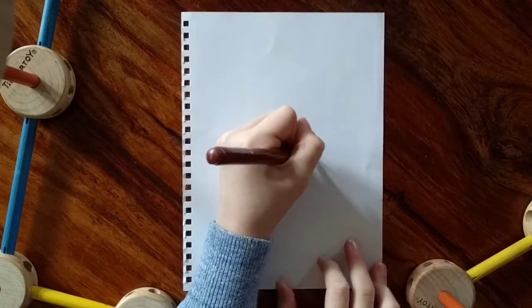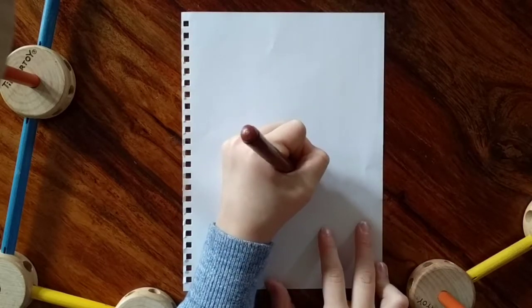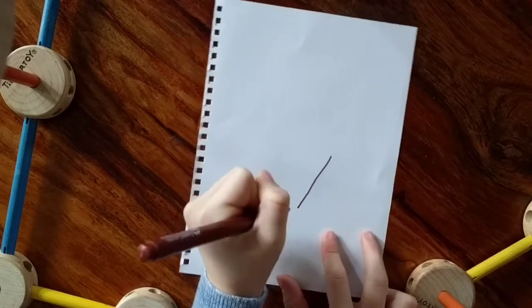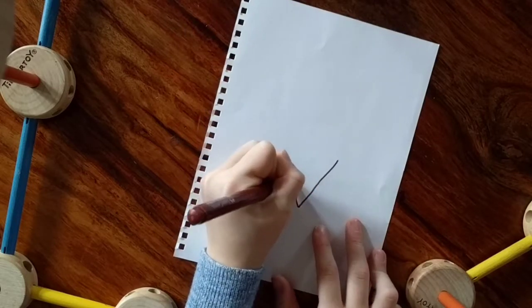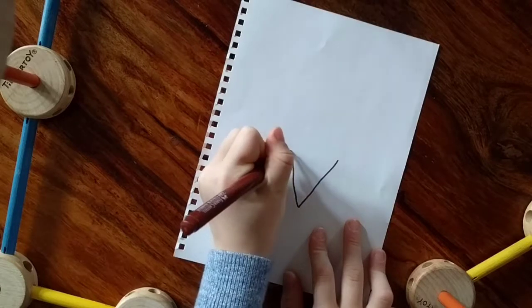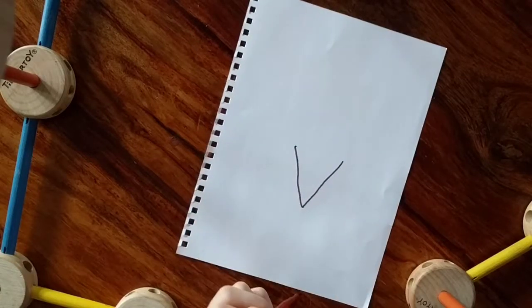What you're going to start off by doing is a little diagonal line like that. Then you're going to do a connector at the bottom. It's kind of like doing a triangle and it should look like that.